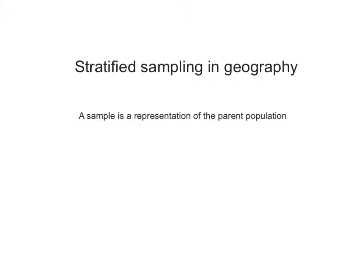In this tutorial you'll learn about stratified sampling in geography. Sampling is a way of best representing a parent population. You cannot sample every part of a parent population. You don't have time. So sampling allows you to get a representation of that parent population.